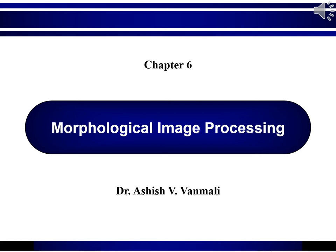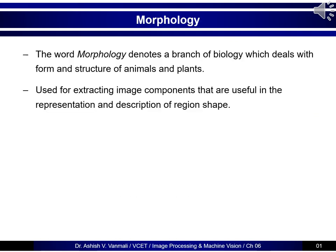Hello everyone, this is Dr. Ashish Manmari and welcome to chapter number 6, that is Morphological Image Processing. The word morphology denotes a branch of biology which deals with forms and structures of animals and plants. So when we deal with the structures in images, we call it as morphological image processing.